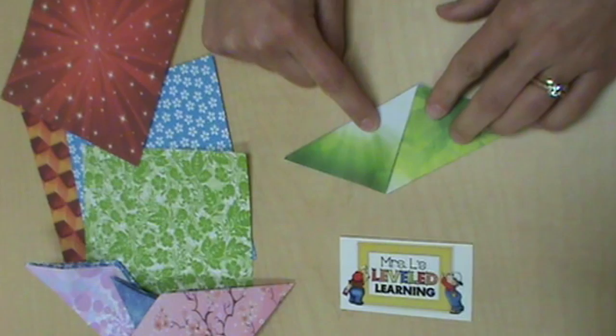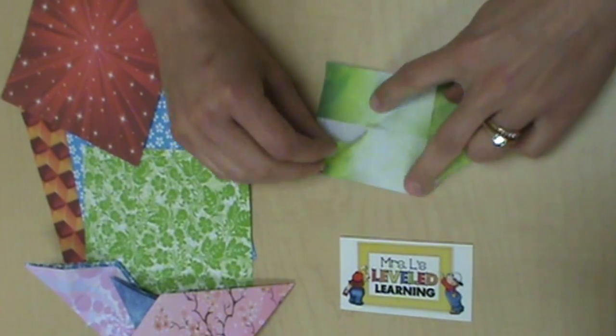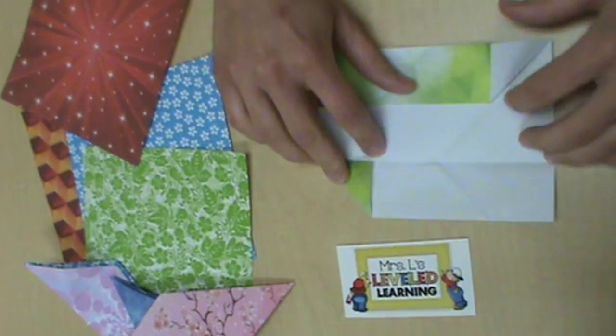Fold the opposite corner in the opposite way, so maybe the top left goes down, and that will work the same on both sides.